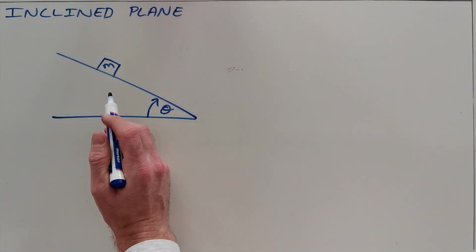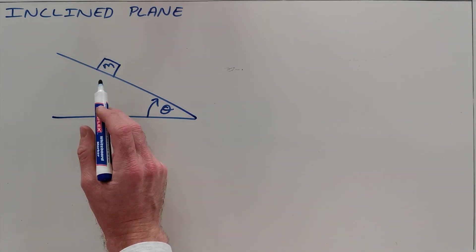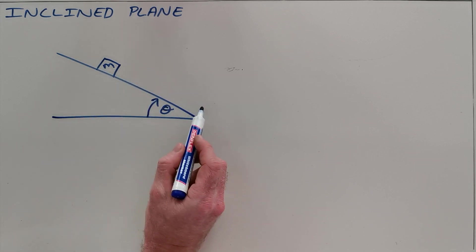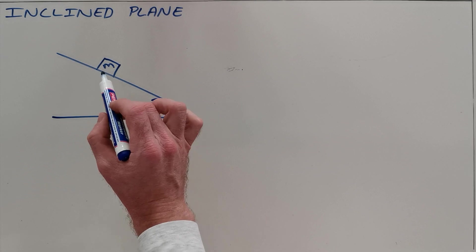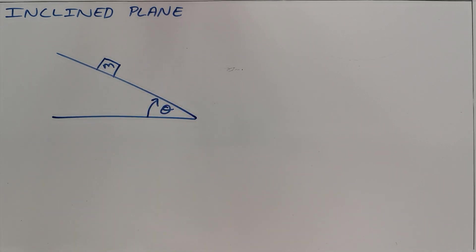Now what this changes is that the force of gravity now acts in essentially two planes. The one plane being the force of gravity or the component of gravity that is pulling that object down the slope, and then the other component of gravity that is pulling the object into the slope.